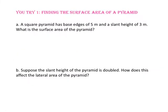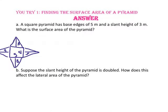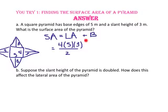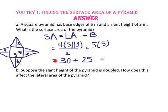Pause the video and do U-try number 1. In part A, a square pyramid has base edges of 5 meters and a slant height of 3 meters. What is the surface area of the pyramid? Let's begin by finding the lateral area: the base 5 times the slant height 3 divided by 2, and there are 4 of those triangles. The lateral area — 4 times 5 times 3 divided by 2 — is 30. The area of the base is 5 times 5, or 25. The surface area is 30 plus 25, or 55 meters squared.